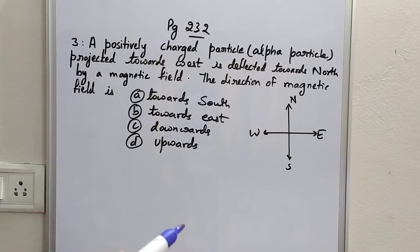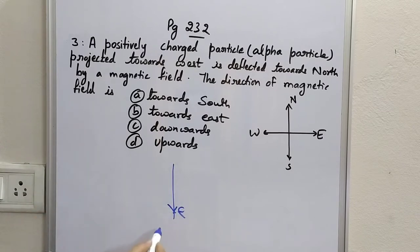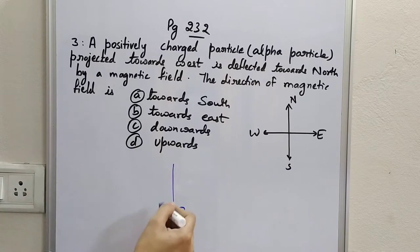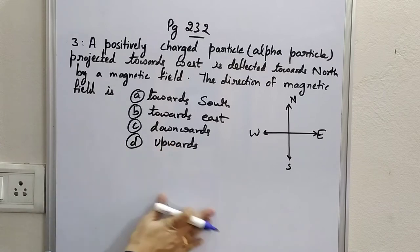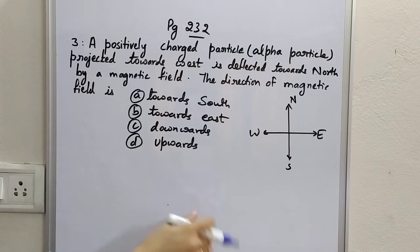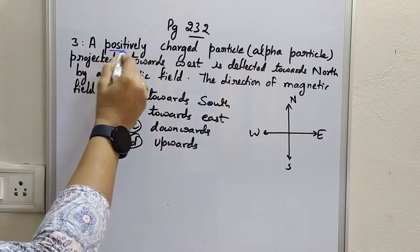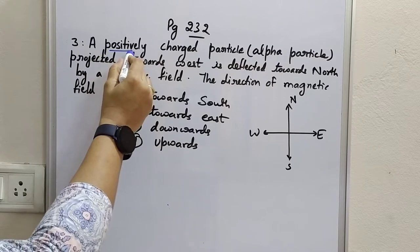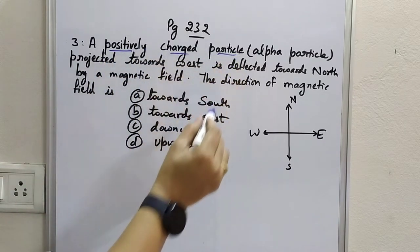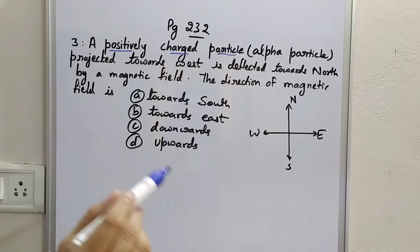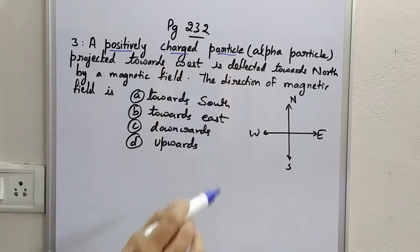Electrons are negatively charged particles. If an electron moves from top to bottom, the direction of current will be perfectly opposite to it. But here the question is about a positively charged particle. The direction of a positively charged particle will be the direction of electric current.